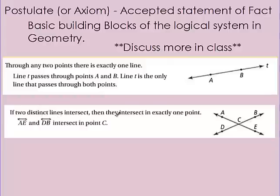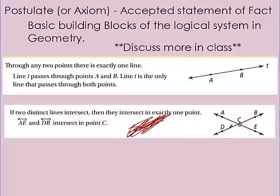The next postulate: if two distinct lines intersect, then they intersect at exactly one point. Line AE and line DB intersect at point C. Whenever you cross two lines and they're not right on top of each other — they're different lines at different angles — they're going to cross at one point. There's no way to draw one line and another line and have it cross twice; it's only going to cross once. You can just take two sticks — you're not going to be able to make two straight sticks cross more than once. These are postulates — these are facts, always true.